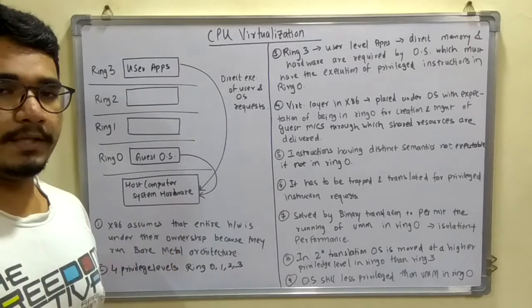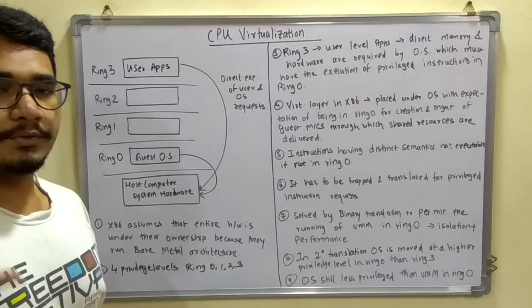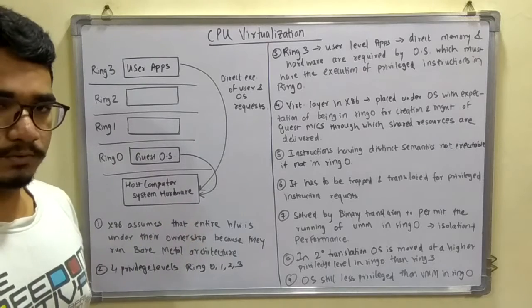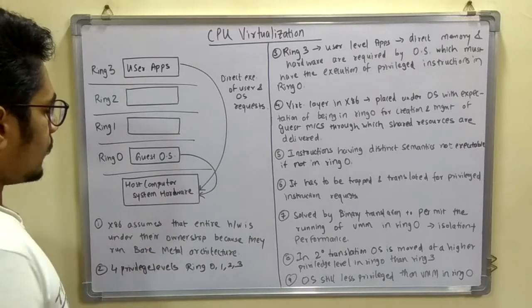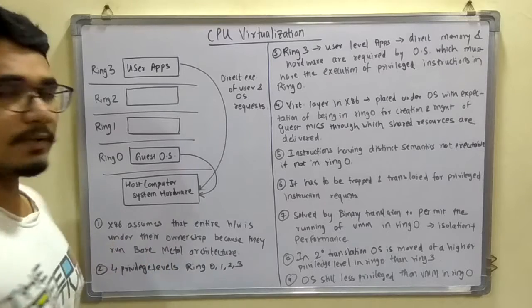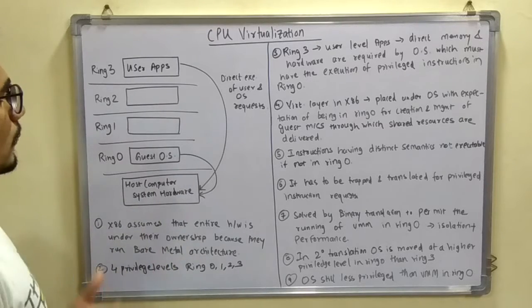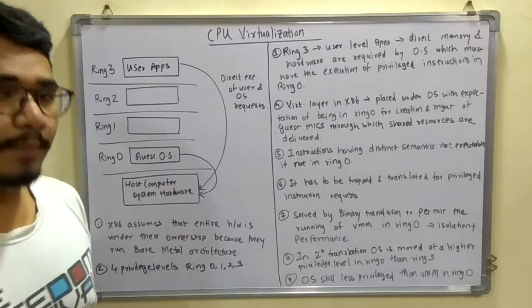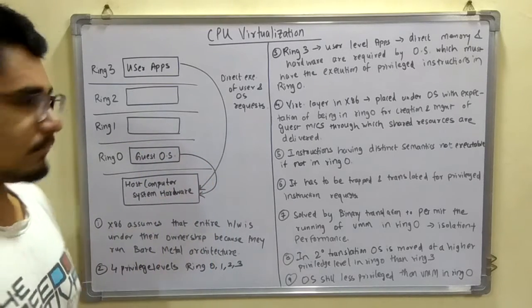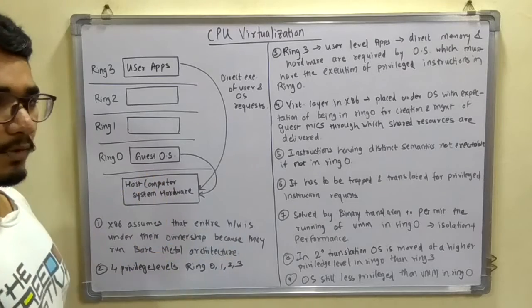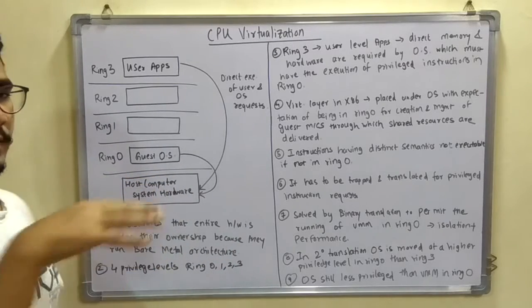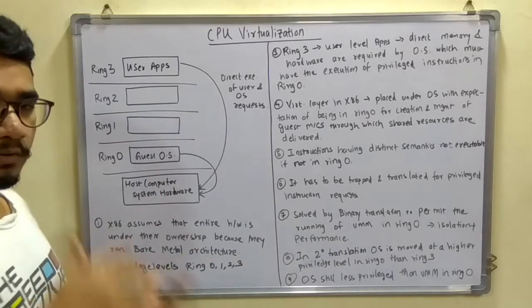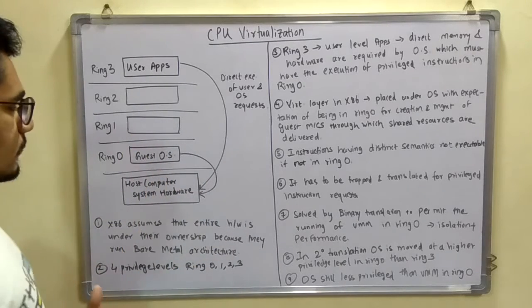The guest OS could be any open-source OS like Fedora or Ubuntu, or a Windows license. At the base level you have the host computer system and hardware where everything runs. This diagram corresponds to full virtualization using binary translation, which also involves a VMM — though for this CPU virtualization discussion I've focused on the rings rather than the VMM.